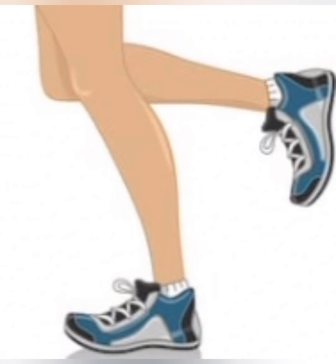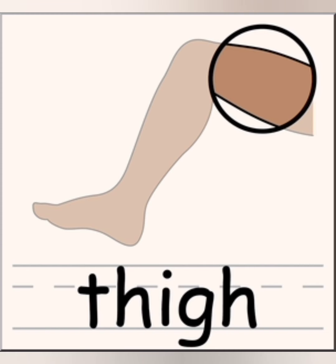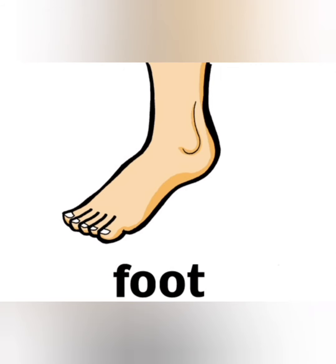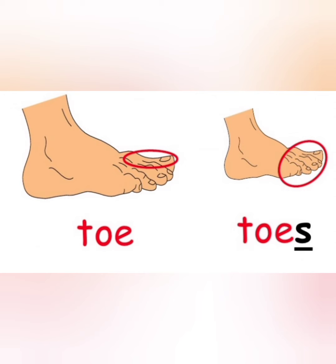In our legs we can see some other parts also. Look at this picture. Here is a part — this is the thigh part. And knees. And we can see foot. In foot we have ten fingers. One finger in our foot is called a toe, and ten fingers are called toes.